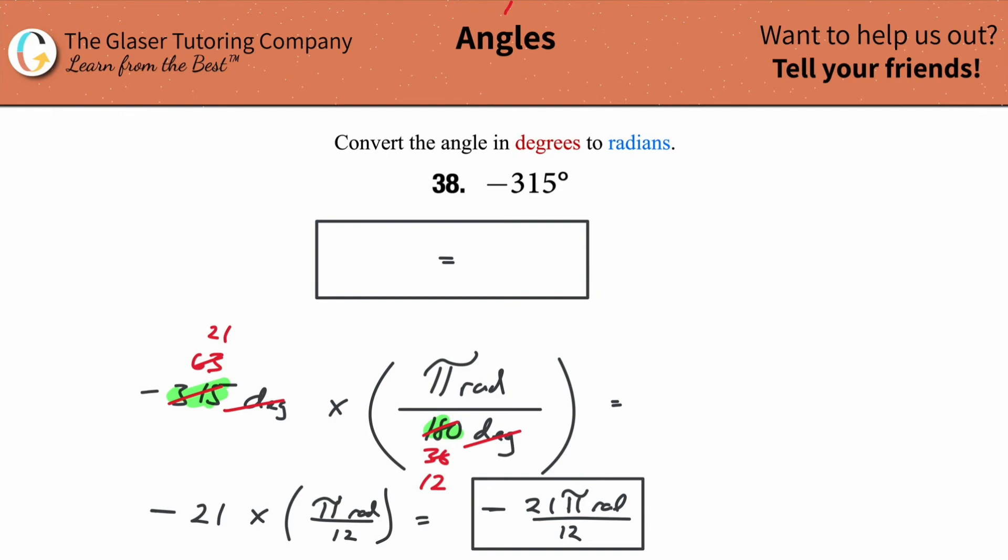Remember, you can always find a decimal answer here. You just take this, and you do 21 times pi, which is about 3.14, divided by 12. This answer, in terms of a decimal, because I know a lot of you might be looking at that and saying, what the heck does that even mean? This literally means negative 5 point, roughly 5. Basically, negative 5.5 radians. That's what it means.